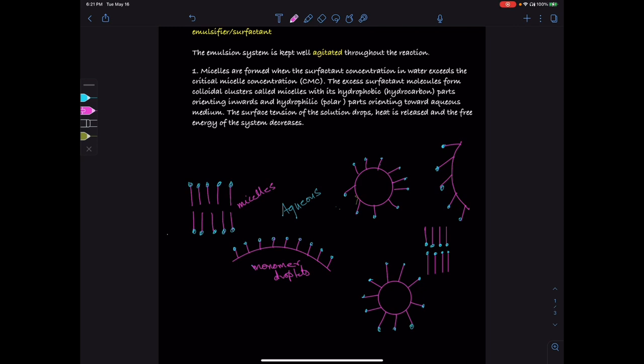The monomer droplets are large and are in the order of about 1 to 10 micrometers, while the micelle sizes are in the order of nanometers. Some monomer molecules are also in the aqueous medium, and some micelles swell up with monomer particles.